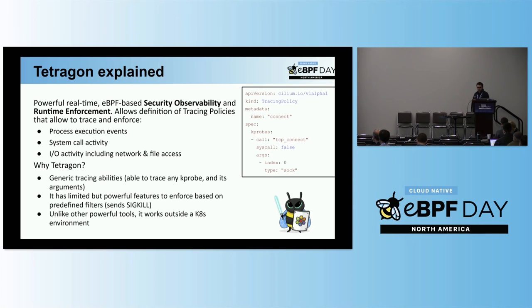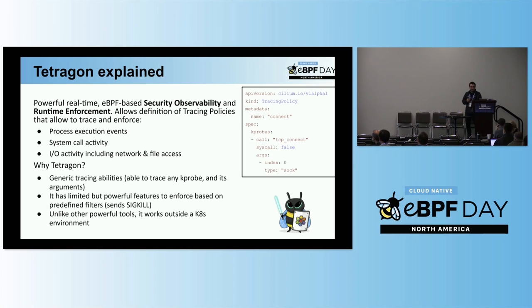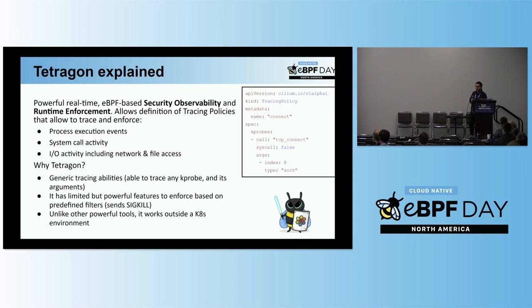Tetragon has limited but powerful features to enforce based on predefined filters, so we can enforce at the kernel level without writing user-mode code. Unlike other powerful tools in the BPF ecosystem, Tetragon also works outside of Kubernetes environments — which is important because some CI systems like GitHub Actions are not running in Kubernetes; they have a dedicated new machine for every new build.